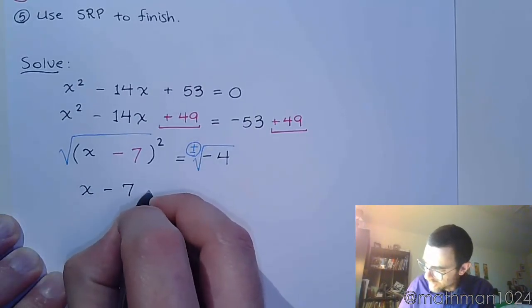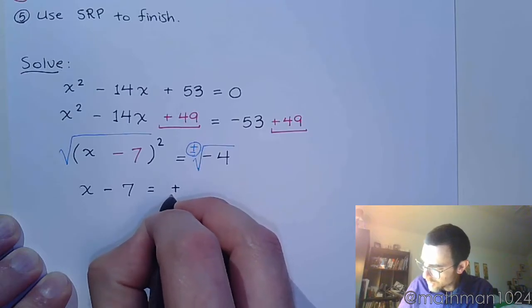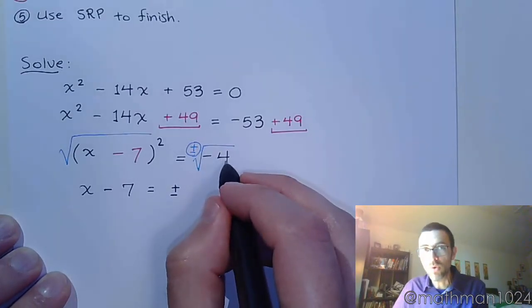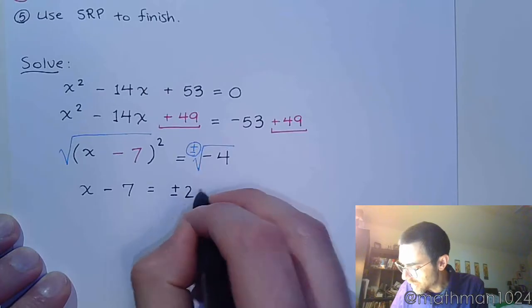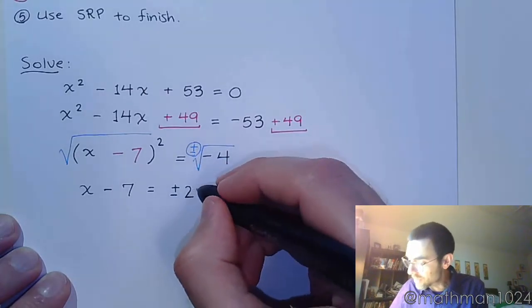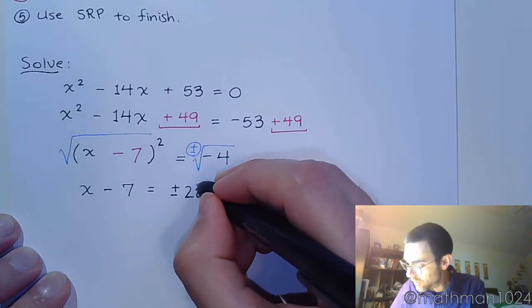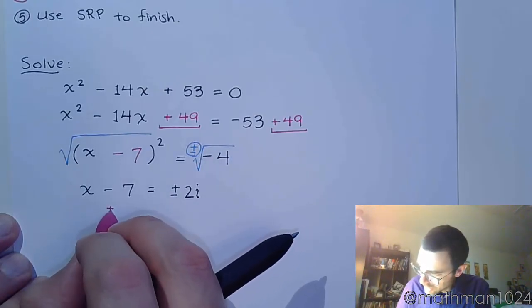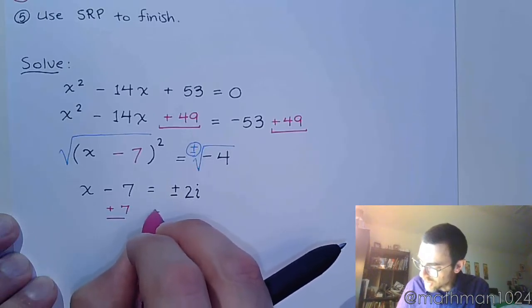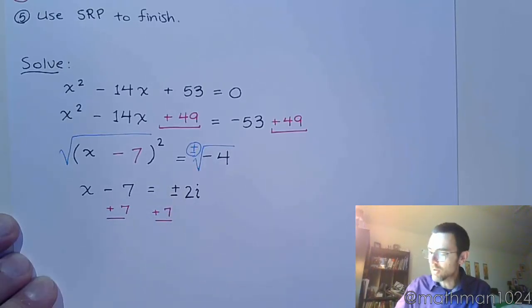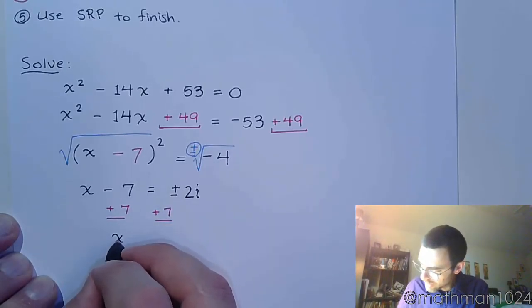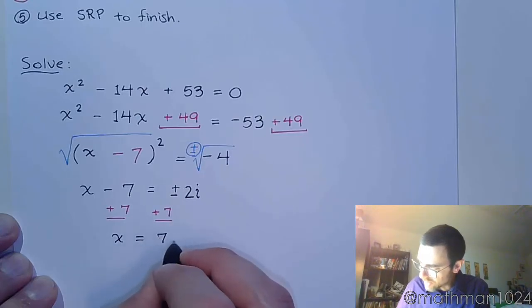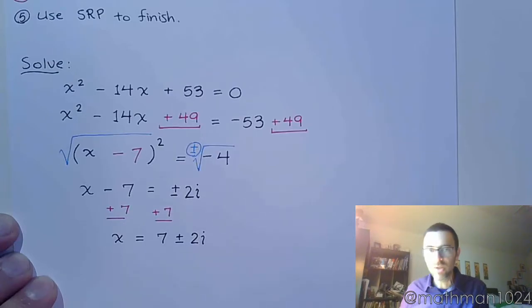So, x minus 7 is equal to plus or minus the square root of 4 is 2. And the square root of the negative is going to give us the imaginary unit i. And then, of course, the final step. We need to add 7 to the other side so that we can finish isolating our variable. So, x is equal to 7 plus or minus 2i.